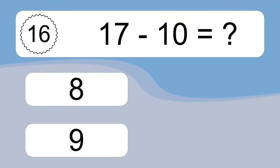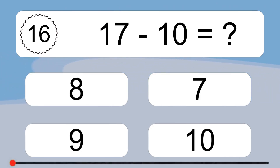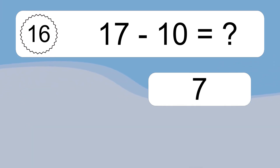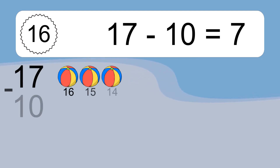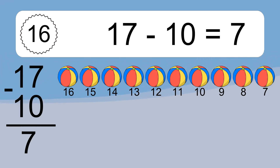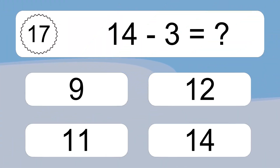17 minus 10 equals what? 17 minus 10 equals 7. Let's count it! 16, 15, 14, 13, 12, 11, 10, 9, 8, 7.